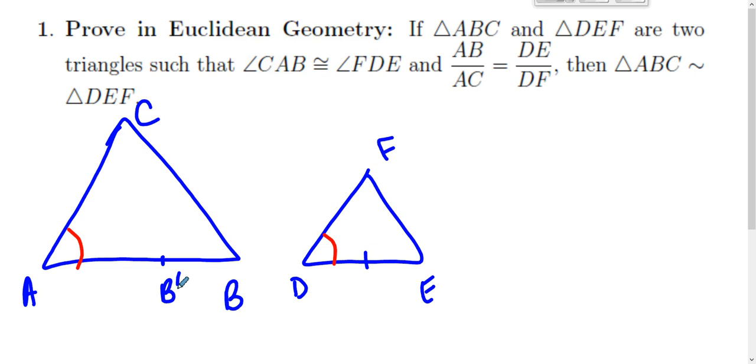On ray AB such that DE is equal to AB prime. We have assumed all of this, and we've assumed that AB is greater than DE without loss of generality.